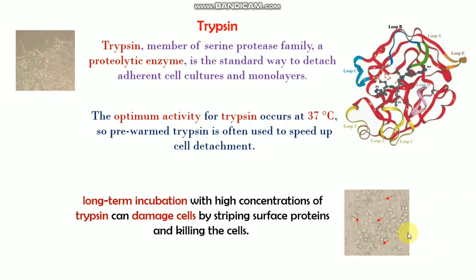If you trypsinize cells for a long time or with high concentration trypsin, that can damage the cells. As you can see in this figure, when you trypsinize for longer time with higher concentration, your cells turn to a round shape, indicating that the cells are dying. You need to maintain the optimum concentration and also the optimum time to trypsinize.